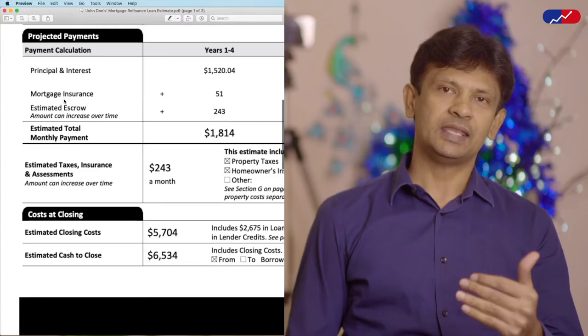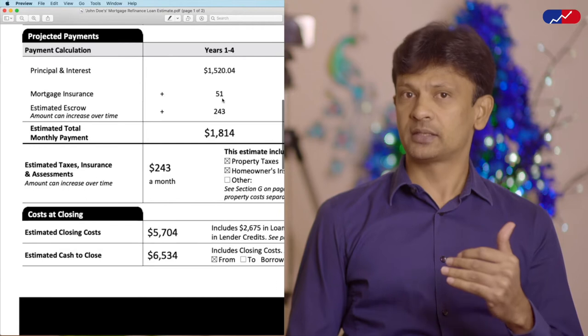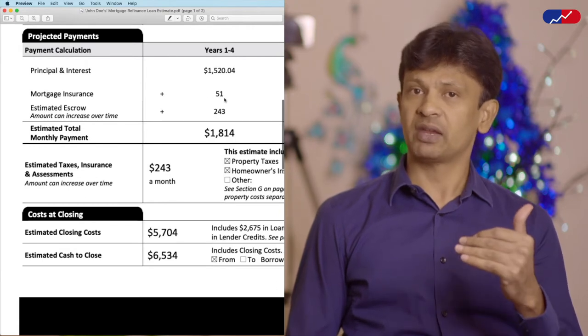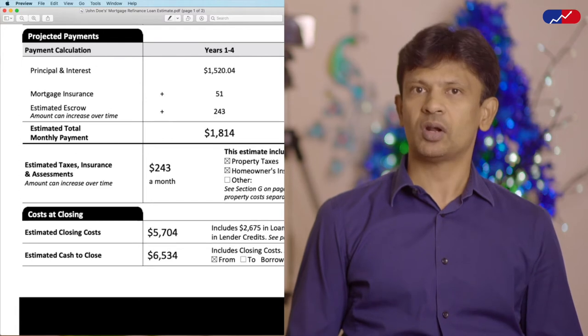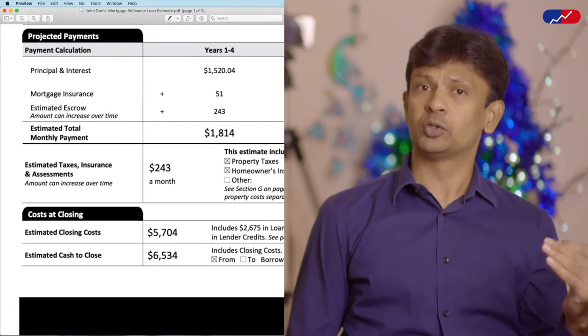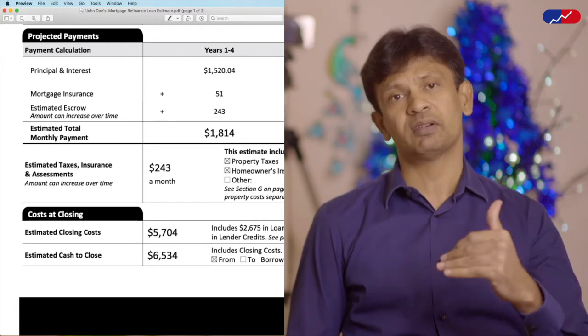That is one whole year of PMI payments that John doesn't have to pay his lender. In this example, by making this single phone call, John would have saved $51 every month for 12 months, saving a total of $612 in PMI payments for the period it took the LTV to go from 80% to 78%. So do yourself a favor — go through your PMI disclosure form and set a reminder for the date when your PMI is scheduled to hit 80%, and call your lender on that date asking for the PMI to be removed from your monthly payments.